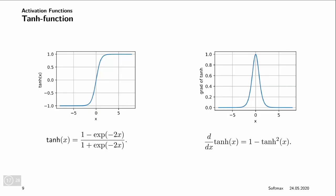Very similar to the logistic sigmoid is the tanh function. The tanh is defined as (1 - e^{-2x}) / (1 + e^{-2x}). It also has this S-shaped or sigmoidal shape, but instead of going from 0 to 1, it has the range minus 1 to plus 1. So it's symmetric around the point 0.